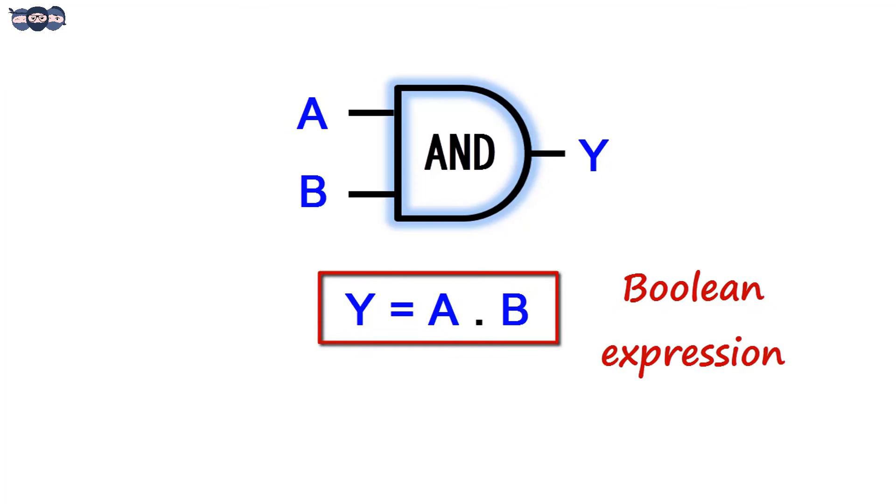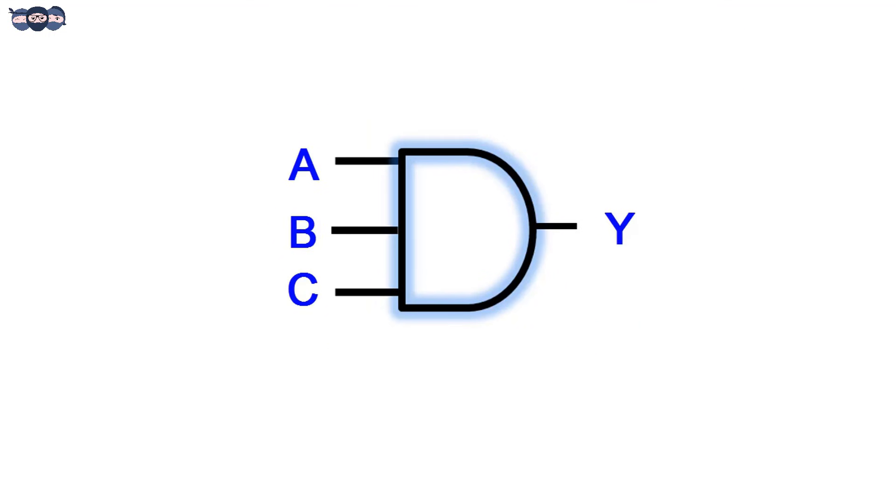A Boolean expression relates the output with its inputs of the logic system. For a three input AND gate, the Boolean expression is Y equals A AND B AND C. This way the Boolean expression can be written for a multiple input AND gate.